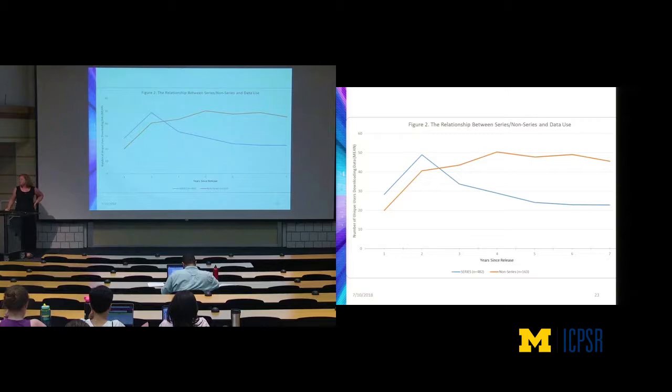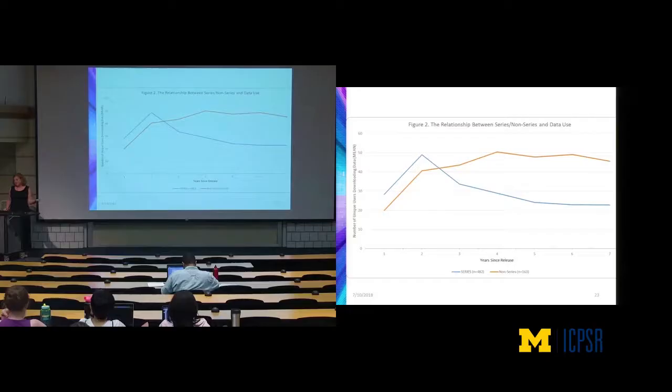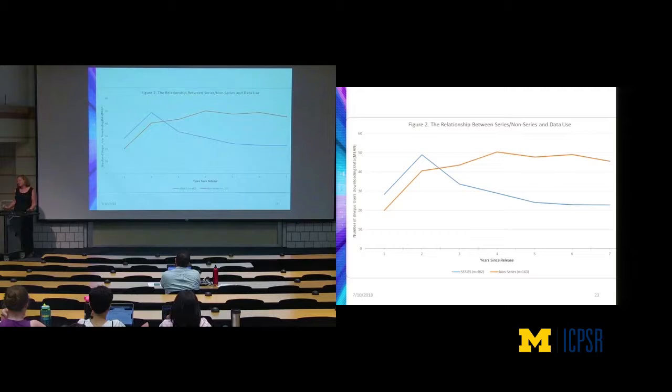Finally, the question of series — data sets where there's either an annual or regular update. When somebody is a user of a series, they're waiting for the latest, most updated data. They know it's coming, they download it when it's new, and then use drops off. So if a study is part of a series, it's really hot, and then a little bit not. But if it's just a one-off study — 163 studies were not part of a series — use stays high for the seven-year period, which I think is pretty remarkable: over 40 unique users over the course of a seven-year period.